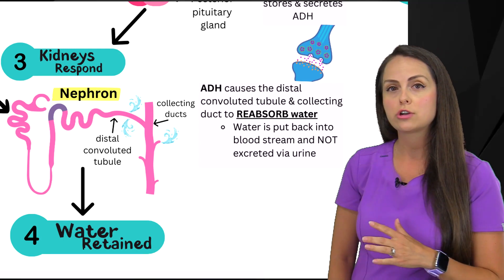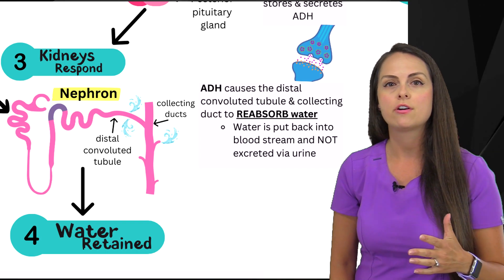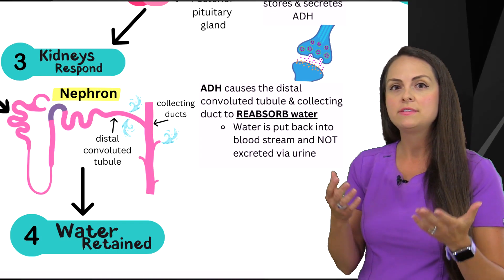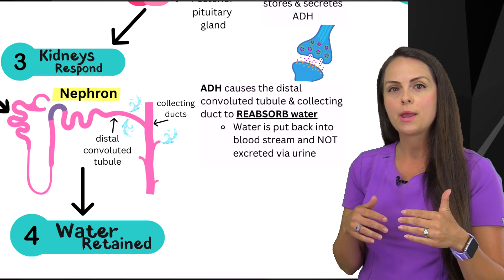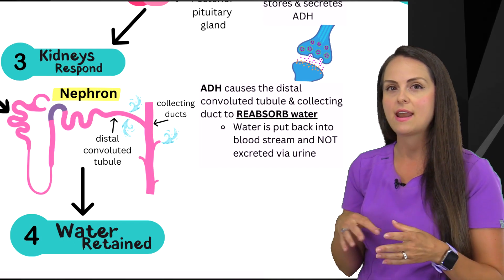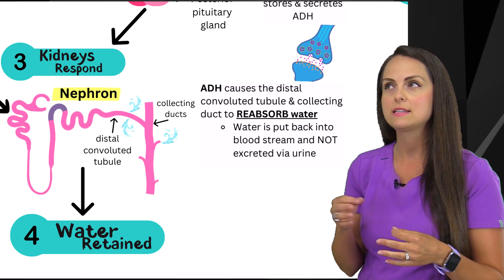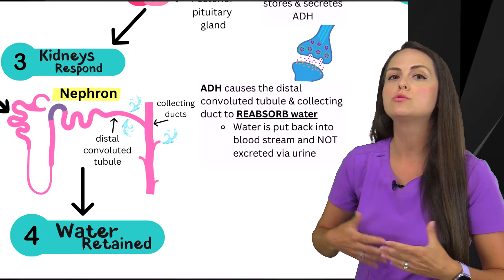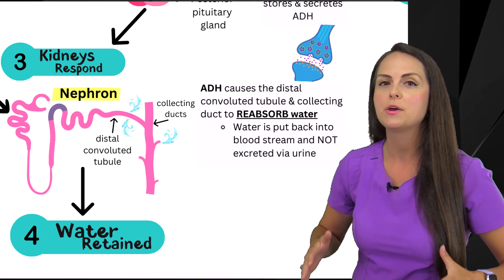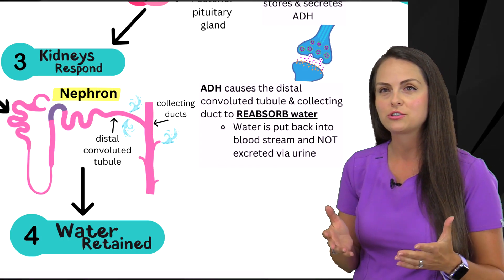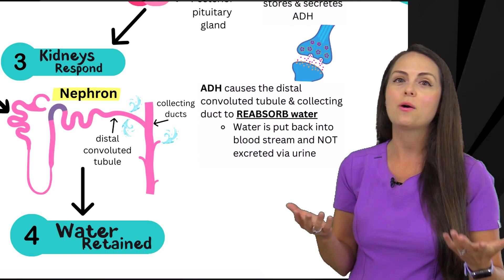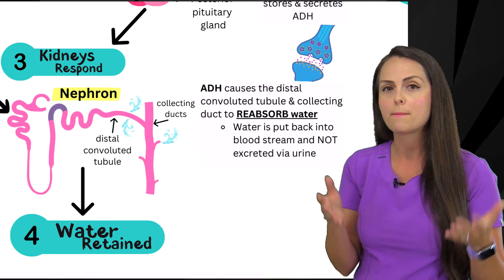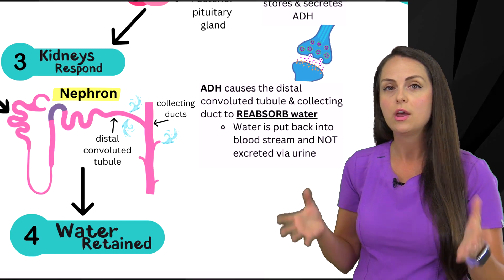ADH is going to cause those structures of the nephron to actually reabsorb water. Instead of taking water and putting it into the filtrate to be urinated out, it's going to cause the body to reabsorb that water and put it back into the bloodstream — which is what we want because we're in a fluid volume deficit and need water back in the body.